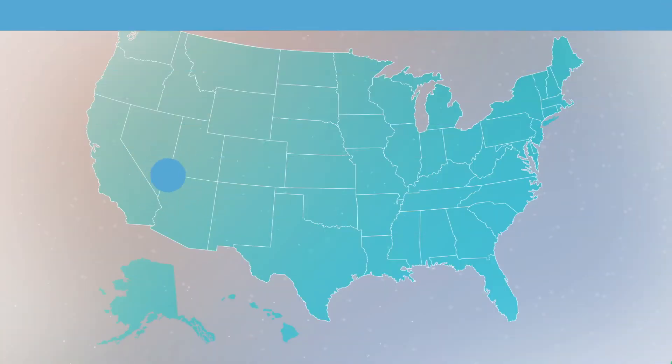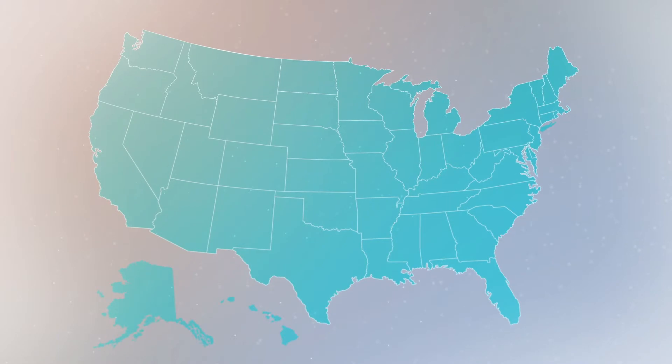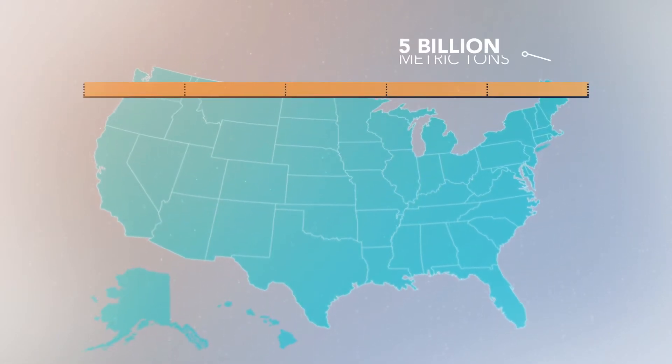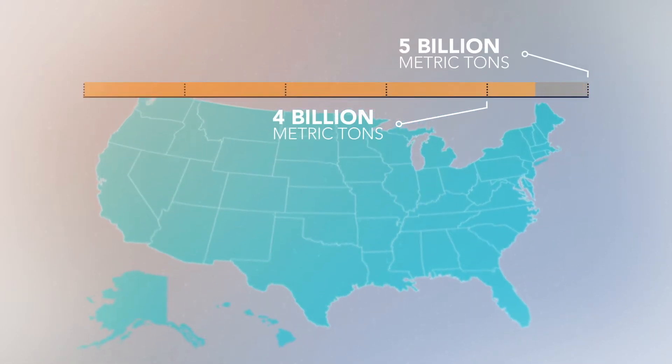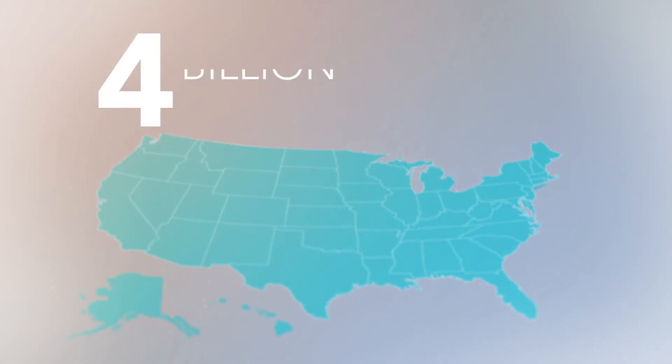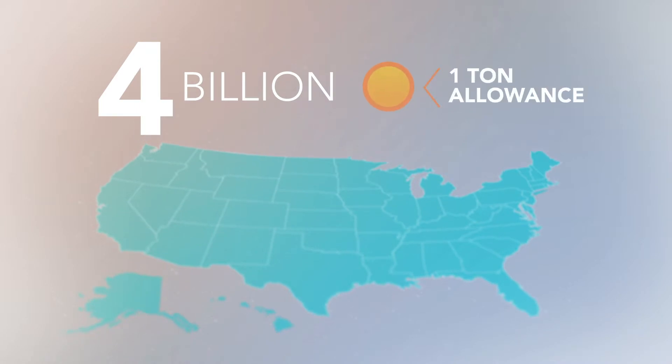A cap-and-trade system works by creating a limit, or cap, on the total amount of greenhouse gases allowed to be emitted by all producers in society. In this system, an initial number of pollution allowances, or permits, is allocated to each producer. For example, if the U.S. wanted to reduce its total annual emissions from 5 to 4 billion metric tons, it could allocate 4 billion 1-ton allowances across the market segments that produce emissions.